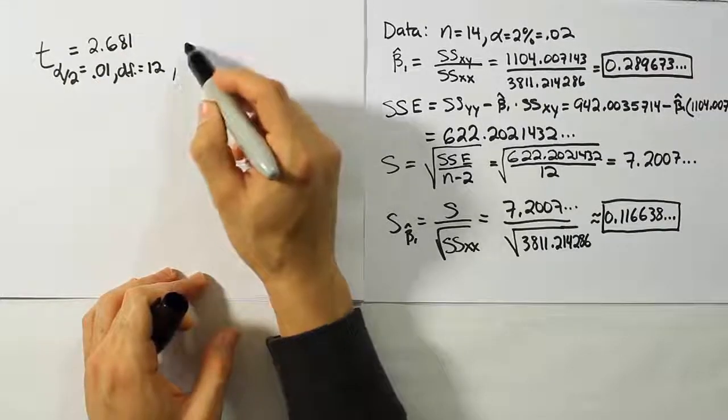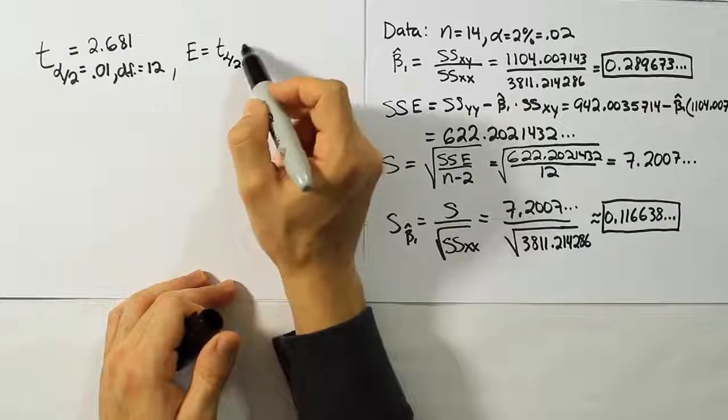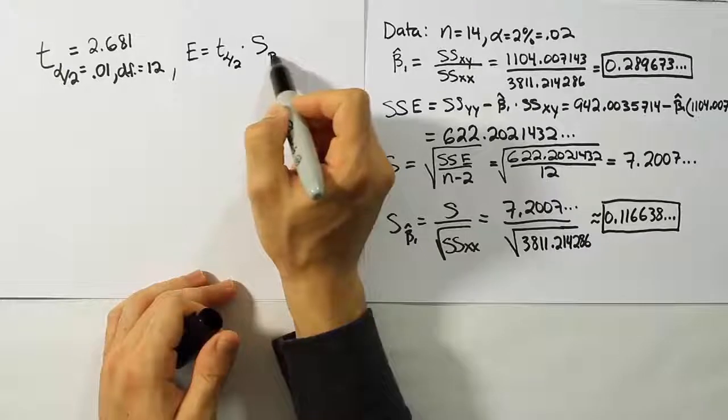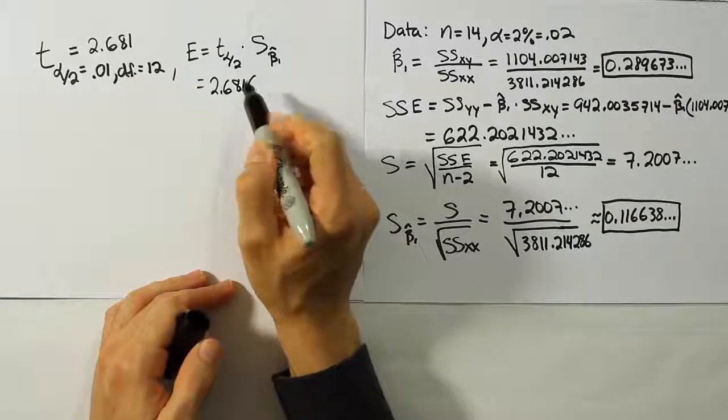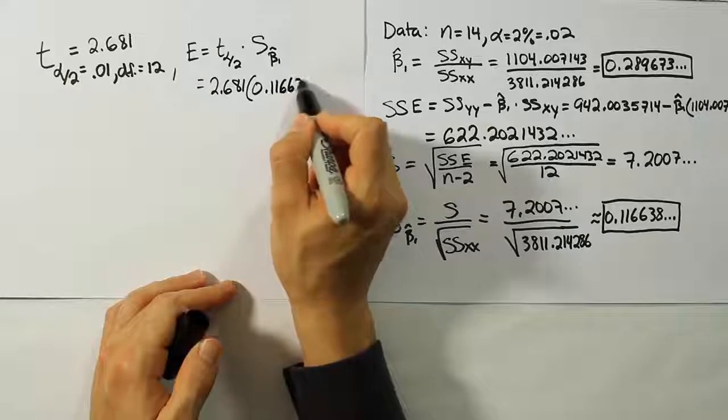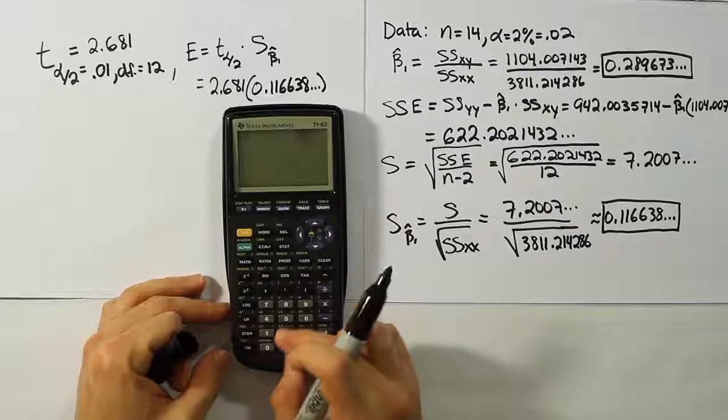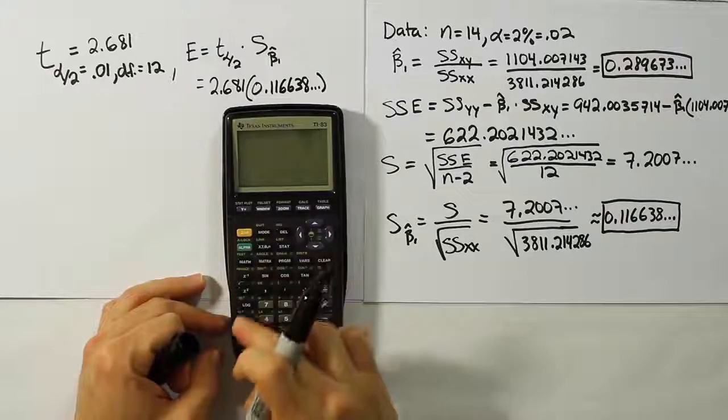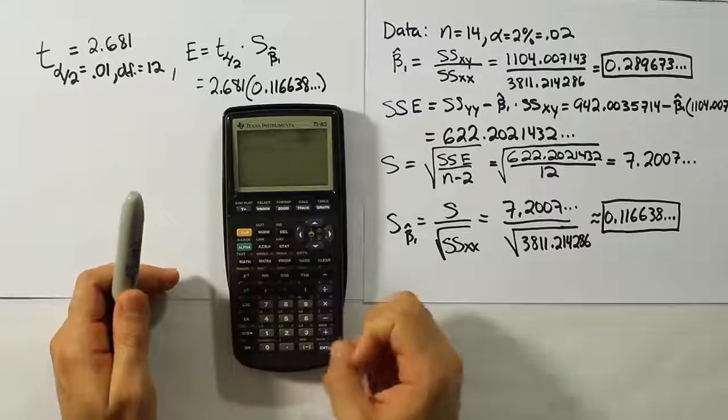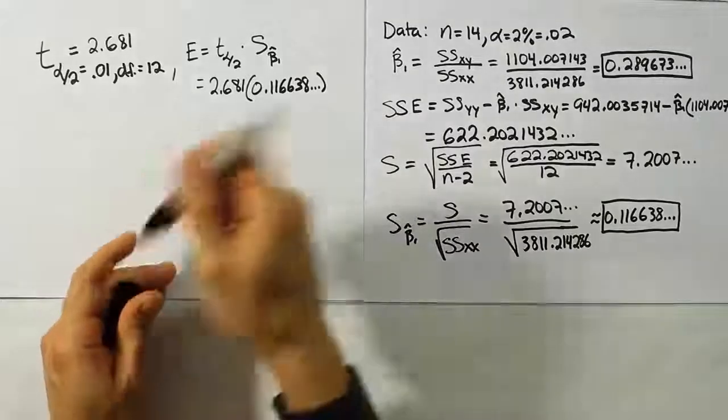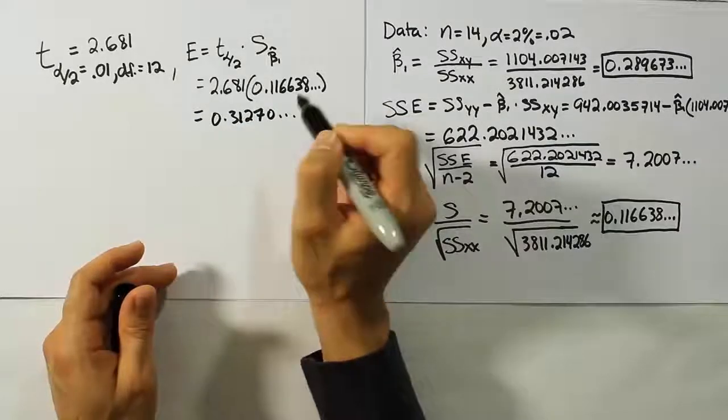Now, we're going to take that value and plug it into our margin of error formula. This formula is quite simple for this confidence interval. The formula is T alpha divided by 2 times the standard error for beta1 hat. So our answer is going to be 2.681 times 0.116638. I've stored that number in my calculator already, so I'm just going to do 2.681 times alpha s, and I get the answer 0.3127. I'm going to store that in my calculator under x and remember that's my margin of error there.